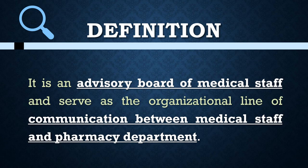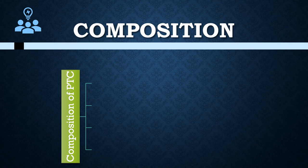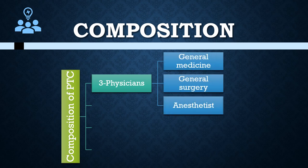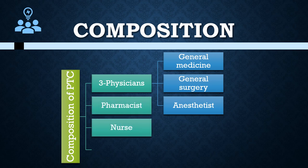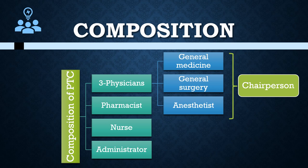The Pharmacy and Therapeutic Committee is composed of representatives from all walks of a healthcare system, as elaborated in a diagram. It contains three physicians — mainly general medicine, general surgery, and anesthesists — one pharmacist, one nurse, and an administrator. A chairperson is appointed from the physician representatives, and the secretary is the pharmacist. Overall, there are six members inside the PTC of any hospital.